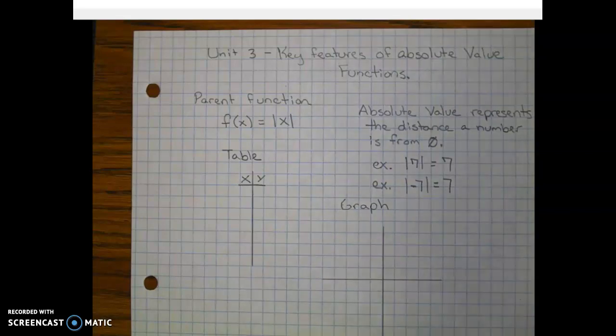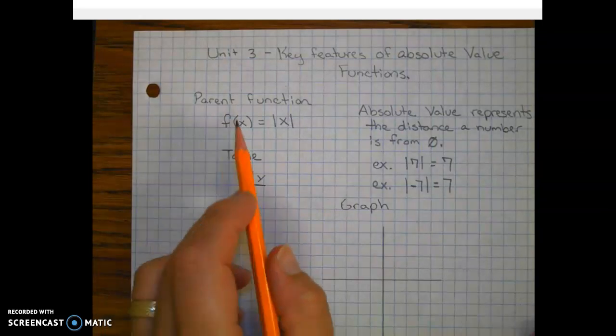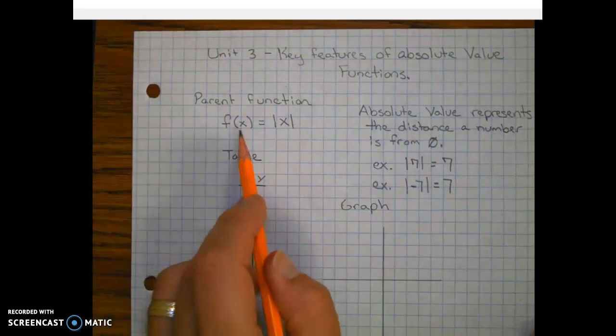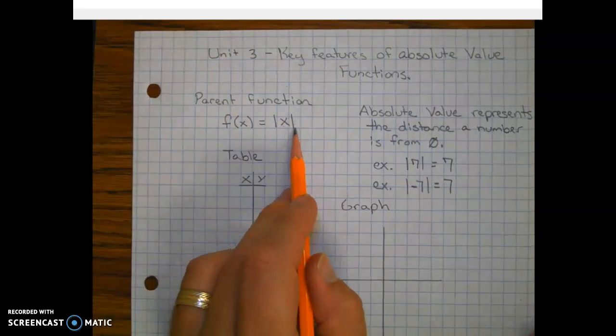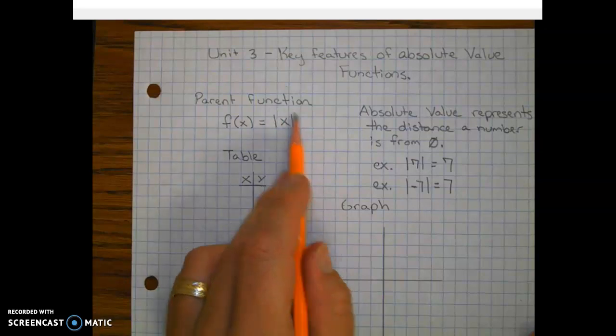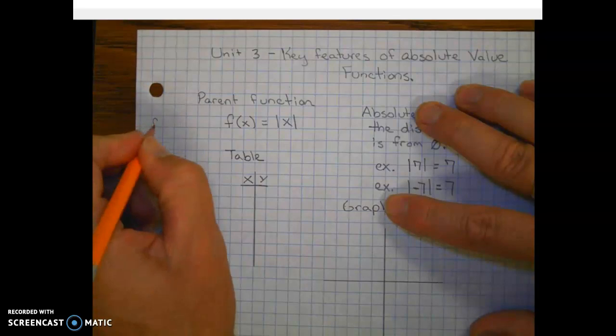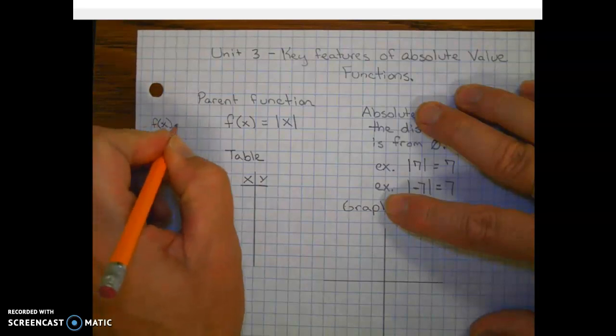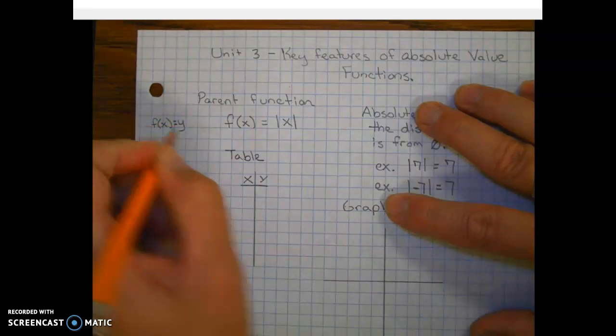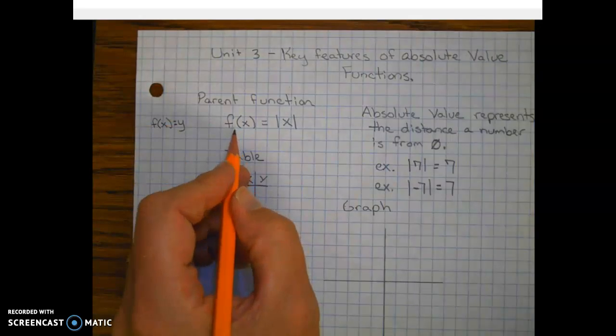So first off we have our parent function here, f of x is equal to the absolute value of x. Remember that f of x represents y. We're in function notation here.